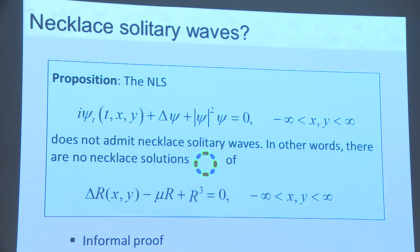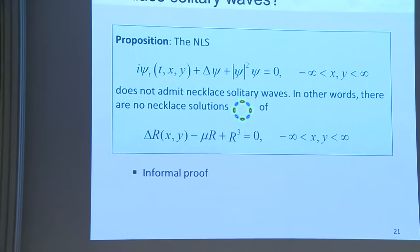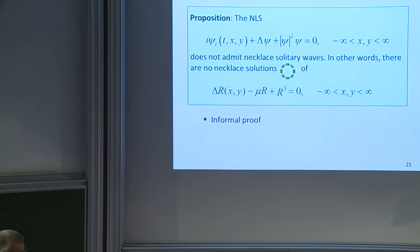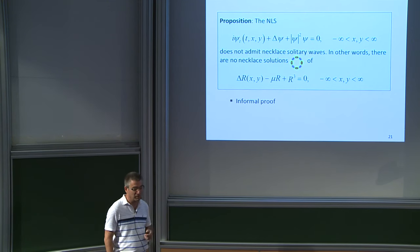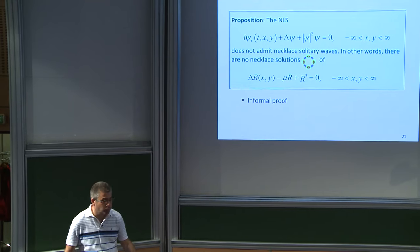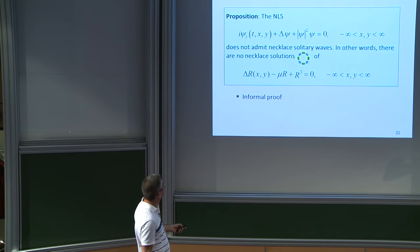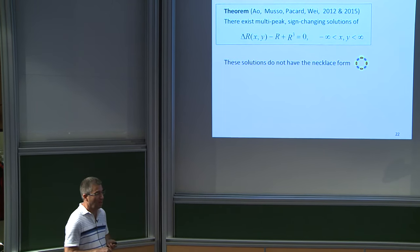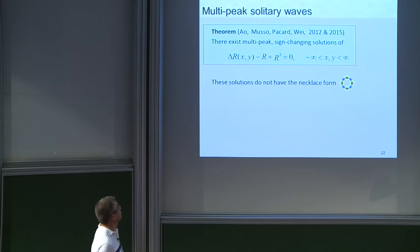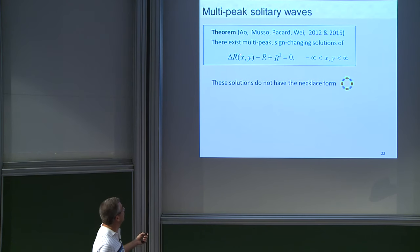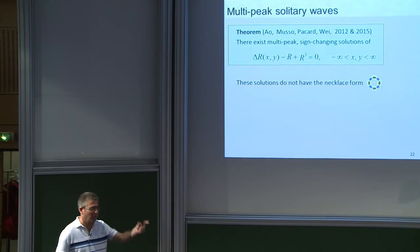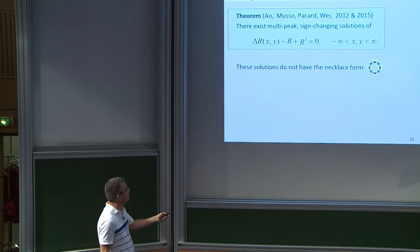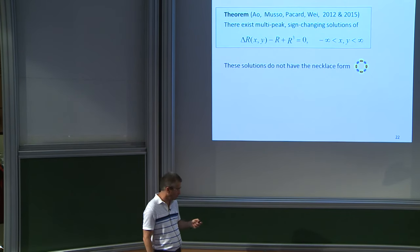Can we have necklace solitary waves in free space in two dimensions? The answer is no. The 2D cubic NLS does not admit necklace solitary waves of the form we seek. There have been proofs of the existence of multi-peak sign-changing solutions of the R equation, but with a very complex construction involving two rings — not of the necklace form we have here. Moreover, any solitary wave of the 2D critical NLS would be strongly unstable.